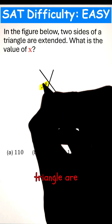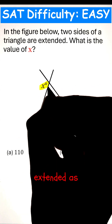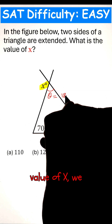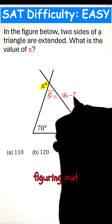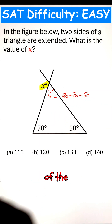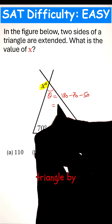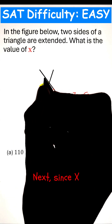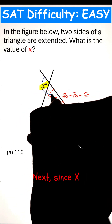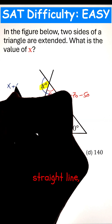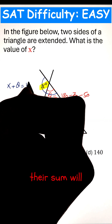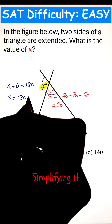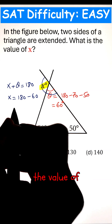If the two sides of the triangle are extended as shown in the figure, to calculate the value of X, we can start by figuring out the third internal angle of the triangle by subtracting the other two from 180. Next, since X and theta form a straight line, their sum will be equal to 180. Simplifying it will give us the value of X.